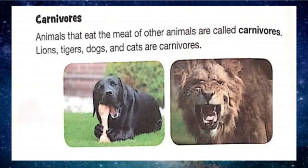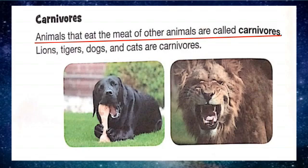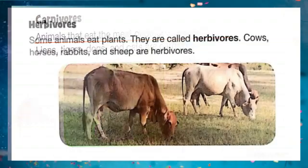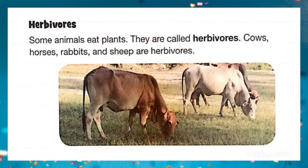Carnivores: animals that eat the meat of other animals are called carnivores. Underline this line. Tigers, dogs, and cats are carnivores. They generally eat herbivores and sometimes other carnivores. Carnivores also hunt other animals.